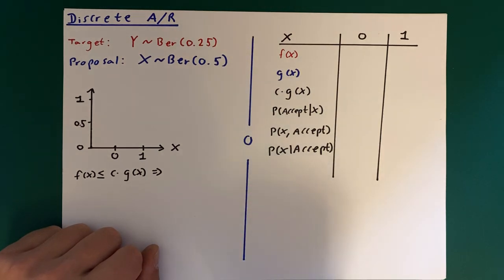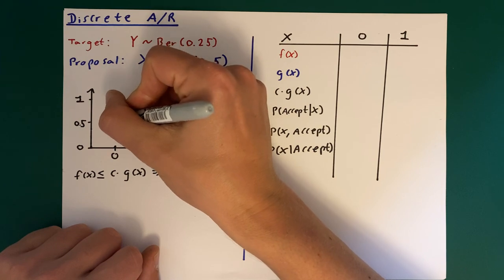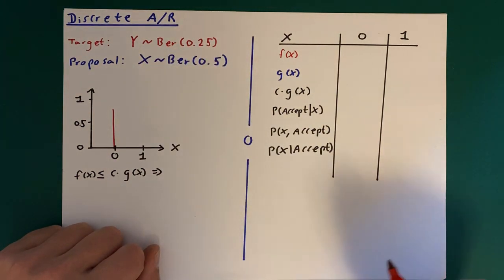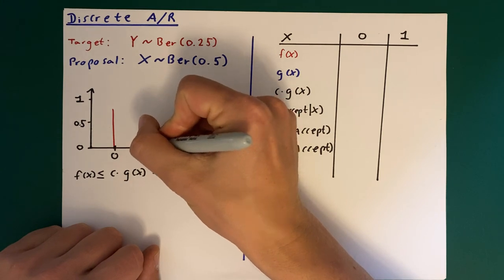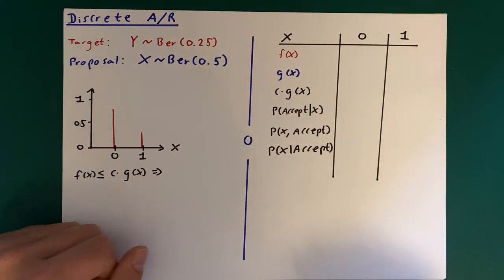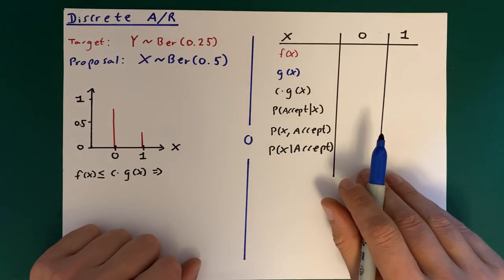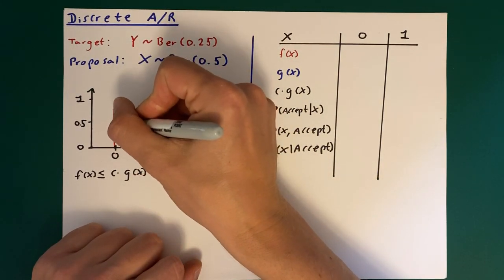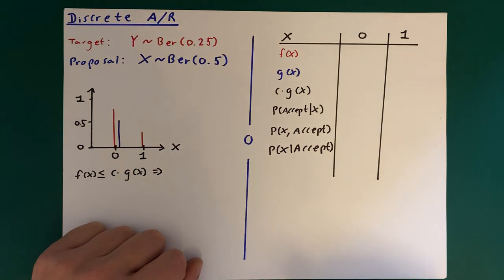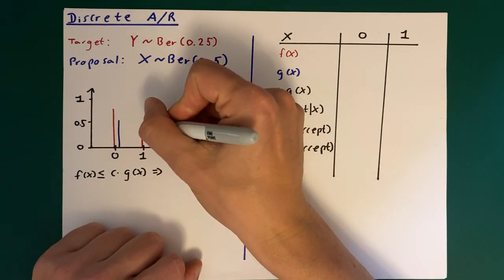Like this: the probability of getting a zero is 75%, and the probability of one is 25%. Then as the proposal we'll use the Bernoulli with probability parameter 0.5. That means there's 50% probability of getting a zero and also a 50% chance of getting a one.